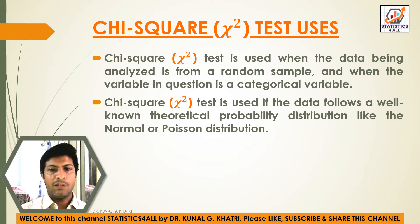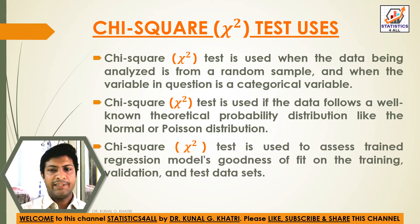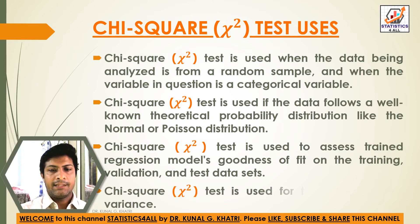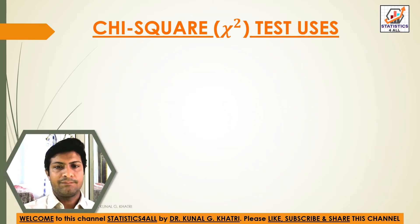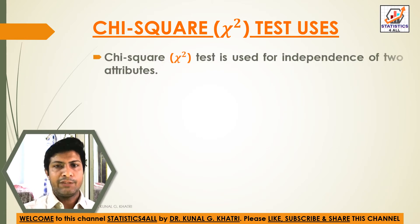Like the normal or Poisson distribution. The chi-square test is used to assess trained regression models' goodness of fit on the training, validation, and test data sets. It is also used for testing population variance and for testing the independence of two attributes.